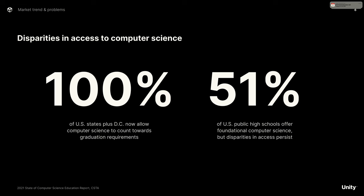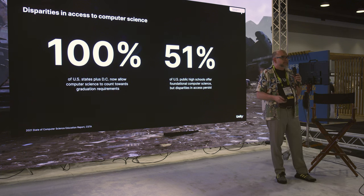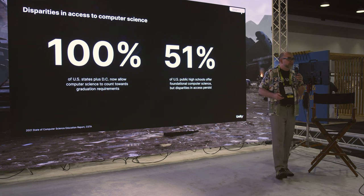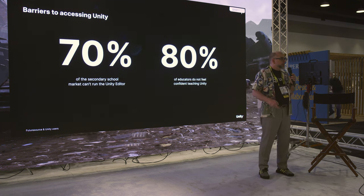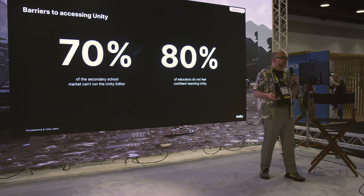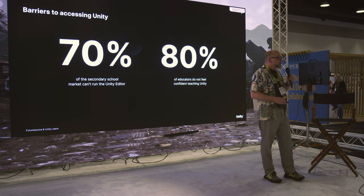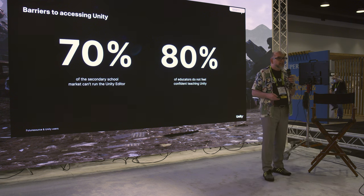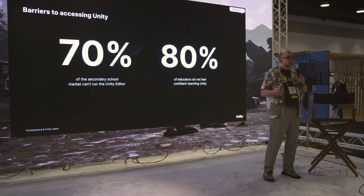We have some startling understanding about the stumbling blocks in education. These numbers show that we can't teach computer science and real-time fast enough for the consumption of people in the business. 70% of secondary schools can't run the Unity Editor because they don't have the required machines. And 80% of educators don't feel confident teaching this content. This has to change.